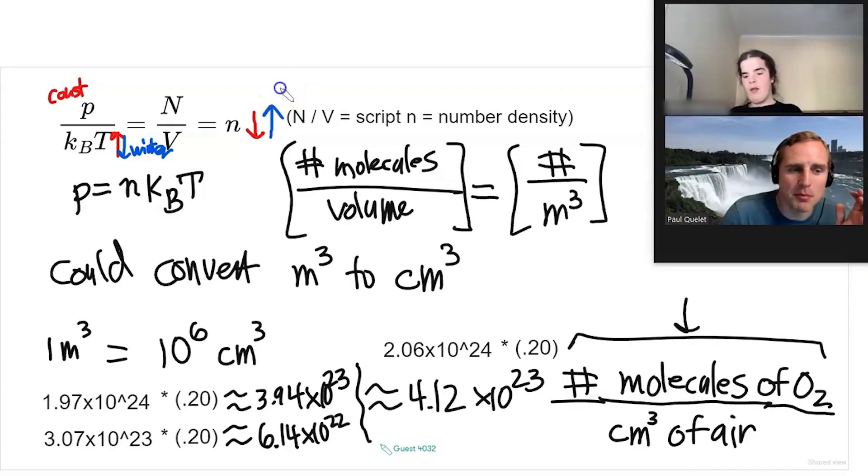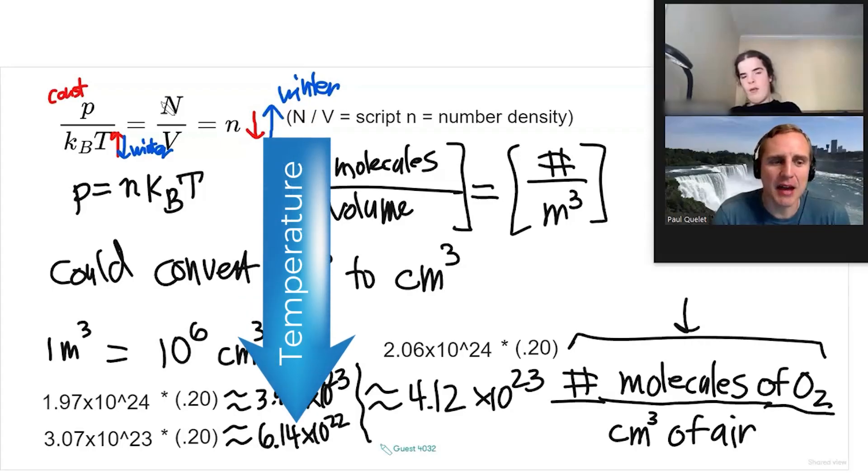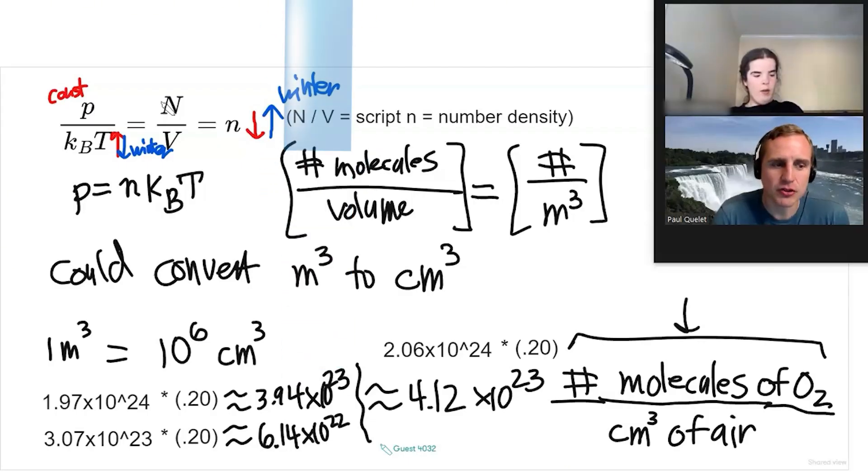Let's assume that the pressure is roughly constant. Again, there's reasons behind that, but we assume that the pressure at various altitudes stays roughly constant throughout the year. Pressure doesn't change nearly as much as temperature does. Assuming the pressure is nearly constant throughout the year, then as the temperature decreases, the number density increases just like we're showing here in the blue. You're dividing by a smaller number, so that means the n, the script n, gets larger.